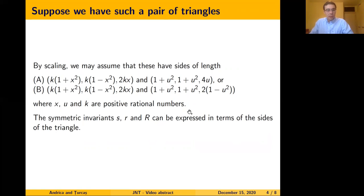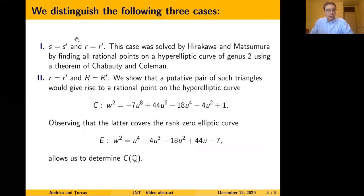Now, the symmetric invariants can be expressed in terms of the sides of the triangle. If one starts to search for a pair of such triangles which have the same semi-perimeter and the same in-radius, one can show that such a pair gives rise to a rational point on a hyperelliptic curve of genus 2. Hirakawa and Matsumura determined all points on that specific hyperelliptic curve of genus 2 using a theorem of Chabauty and Coleman.